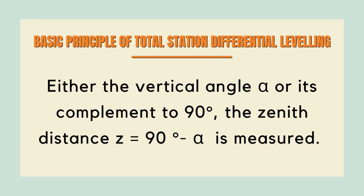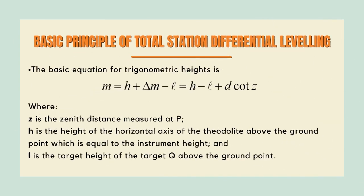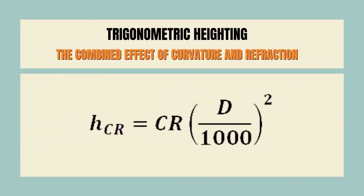As indicated in the figure, either the vertical angle alpha or its complement to 90 degrees — the zenith distance Z, equal to 90 degrees minus alpha — is measured. The basic equation for trigonometric heights is shown in figure 1, where Z is the zenith distance measured at P, H is the height of the horizontal axis of the theodolite above the ground point (equal to the instrument height), and I is the target height of the target Q above the ground point. This equation is only valid for short distances.